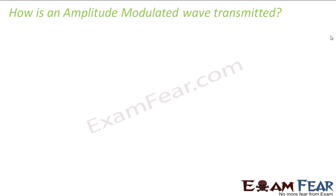So now the question is, the amplitude modulated wave is produced — that we understood. Now the question is, how is this amplitude modulated wave transmitted? Because why are we producing this wave? Because this kind of wave will be easier to transmit. This modulation itself, why are we doing it? Because we want to make a wave which is easier for transmission. A higher frequency wave is easier for transmission, and an amplitude modulated wave is one of that kind. So let us see how this wave gets transmitted.